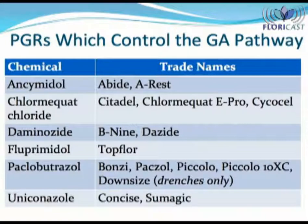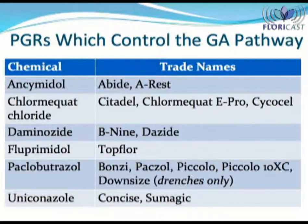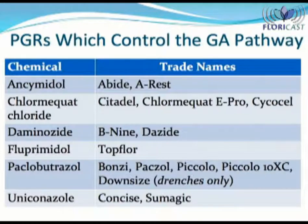So which PGRs control the GA pathway? The chemical name is listed on the left, while the various trade names are listed on the right. These are: Ancymidol, also known as Abide or A-Rest; Chlormequat chloride, which is Citadel, Chlormequat E-Pro, or Cyclocel; Daminozide, known as B9 or Dazide; Flurprimidol, known as Top Floor; Paclobutrazol, which is Bonsai, Paxol, Piccolo, Piccolo 10X, and Downsize; and finally Uniconazole, which is Concise or Sumagic.